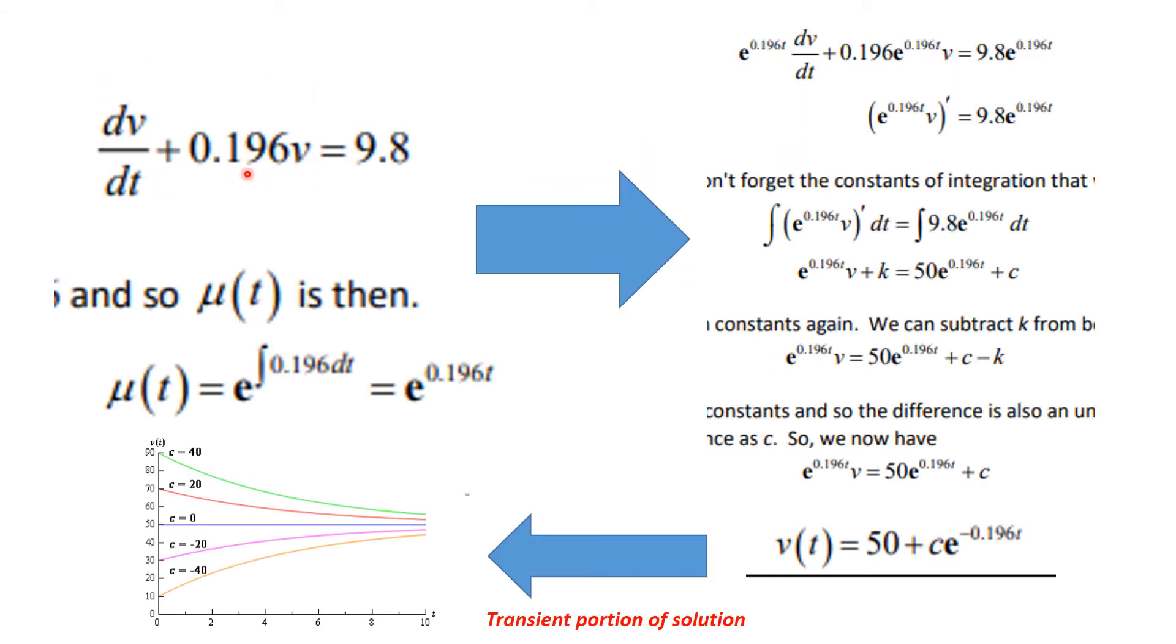Well, you have to move things around to get it into the standard form, but now we know that mu of t has to be e to the integral of 0.196 dt. So, that means this is my mu of t. So, I multiply my equation in standard form all the way across by e to the 0.196t.